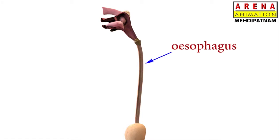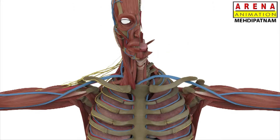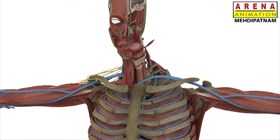Later, the food enters into a long muscular tube called the esophagus. The esophagus is 22 to 25 cm long, narrow, muscular, and tubular in structure.